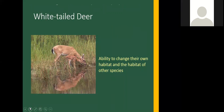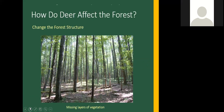Deer are an interesting species — many refer to them as a keystone species because, through what they eat and how much they eat, they can change not only their own habitat but the habitat of other wildlife species as well. One of the ways they affect the forest is by changing its structure. In this slide you can see a park-like stand with essentially no vegetation on the forest floor — no shrub layer, understory, or midstory — just the tree canopy, despite some sunlight getting through.